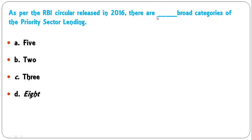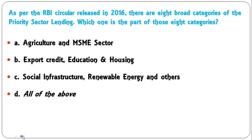As per the RBI circular released in 2016, there are how many broad categories of priority sector lending — five, two, three, or eight? As per this circular, there are eight broad categories of priority sector lending. D is the correct answer.